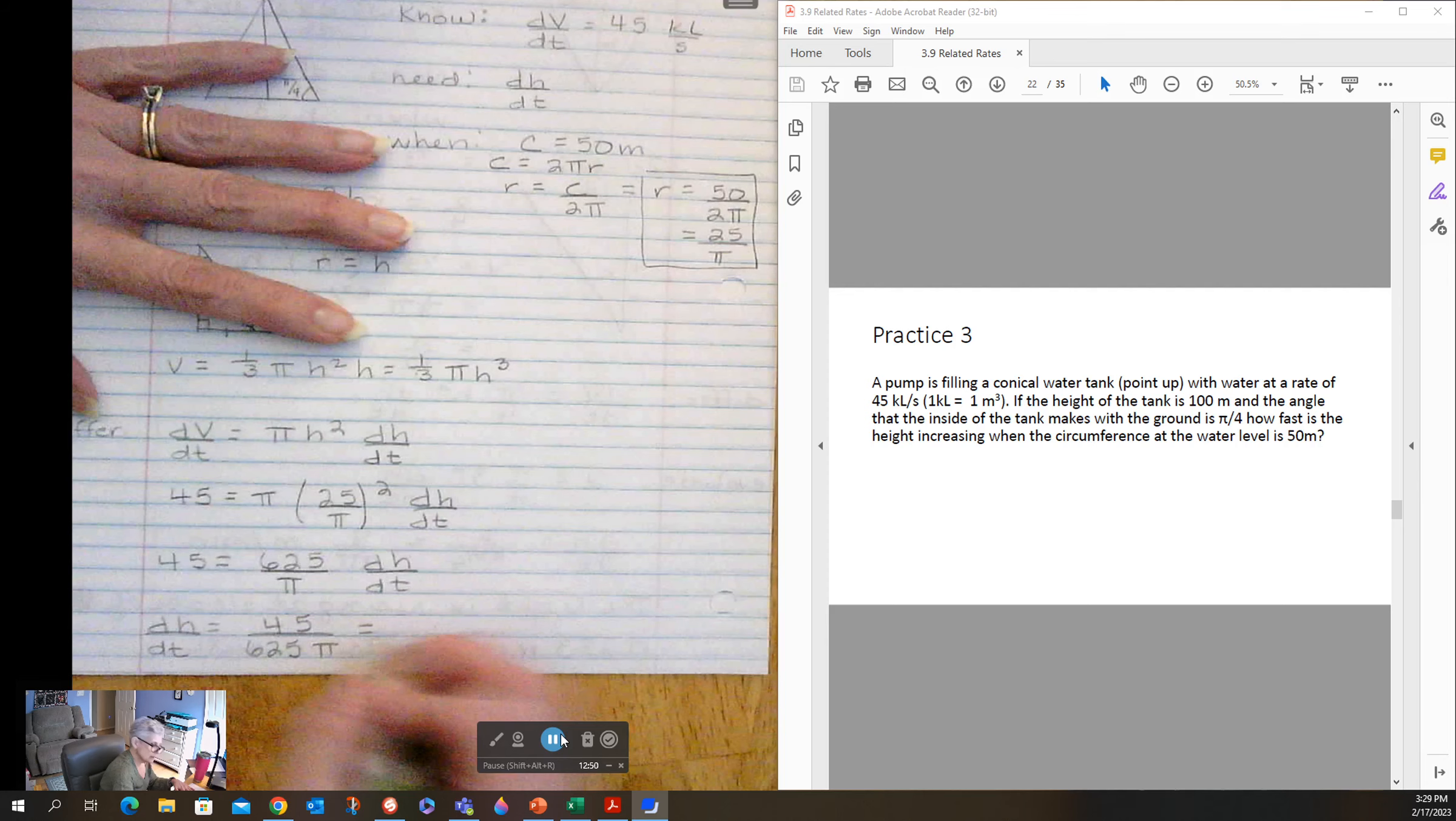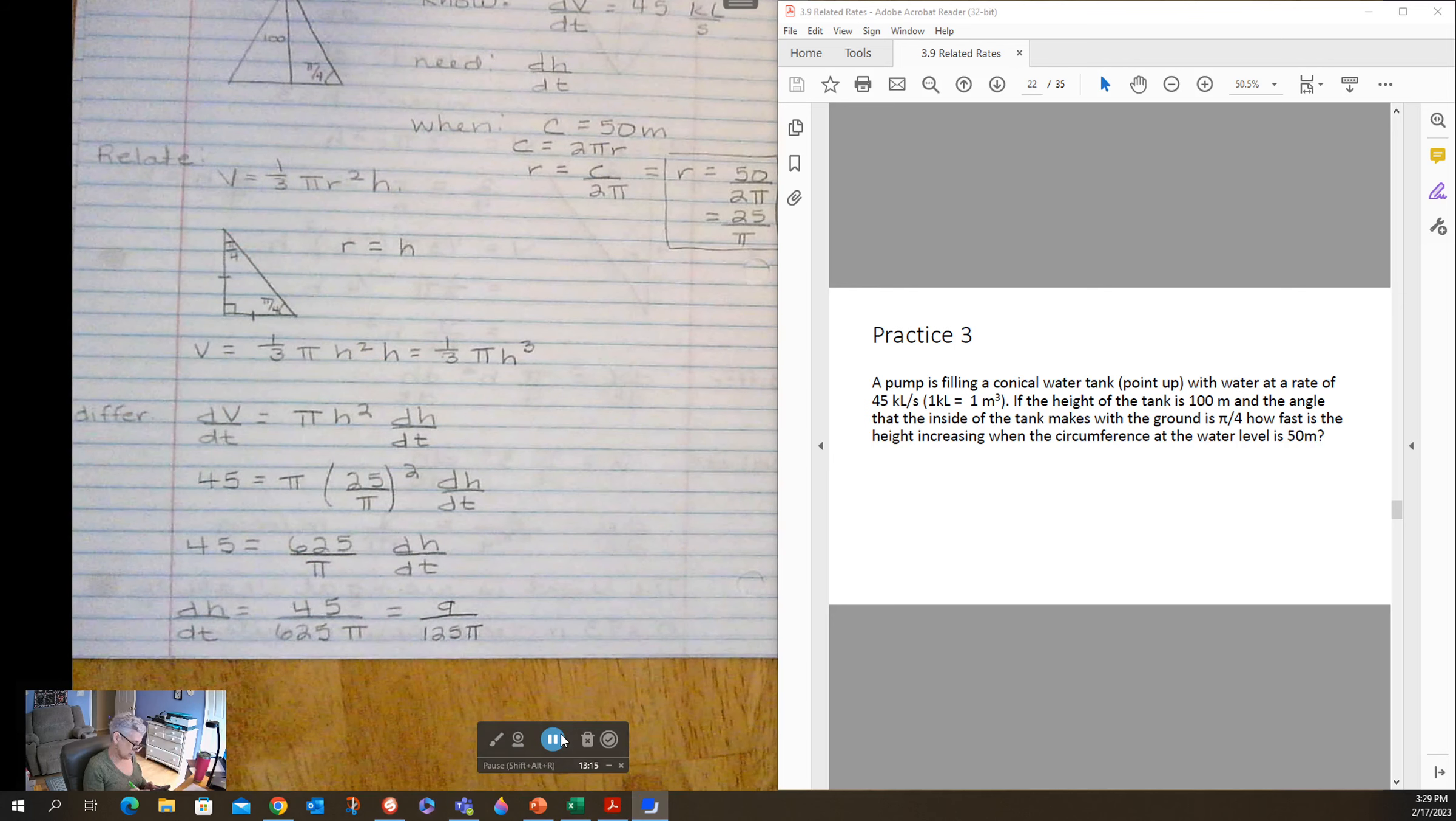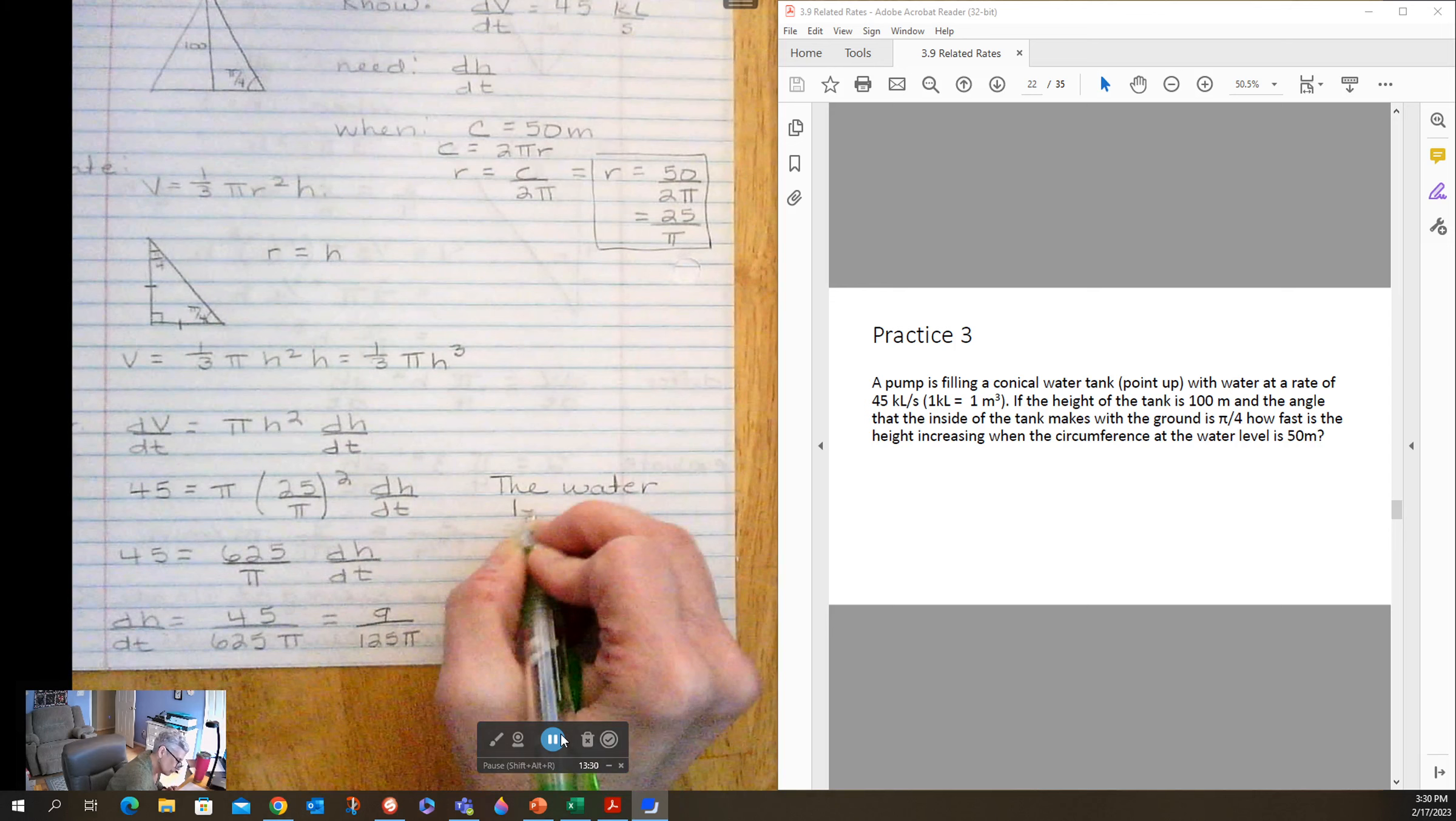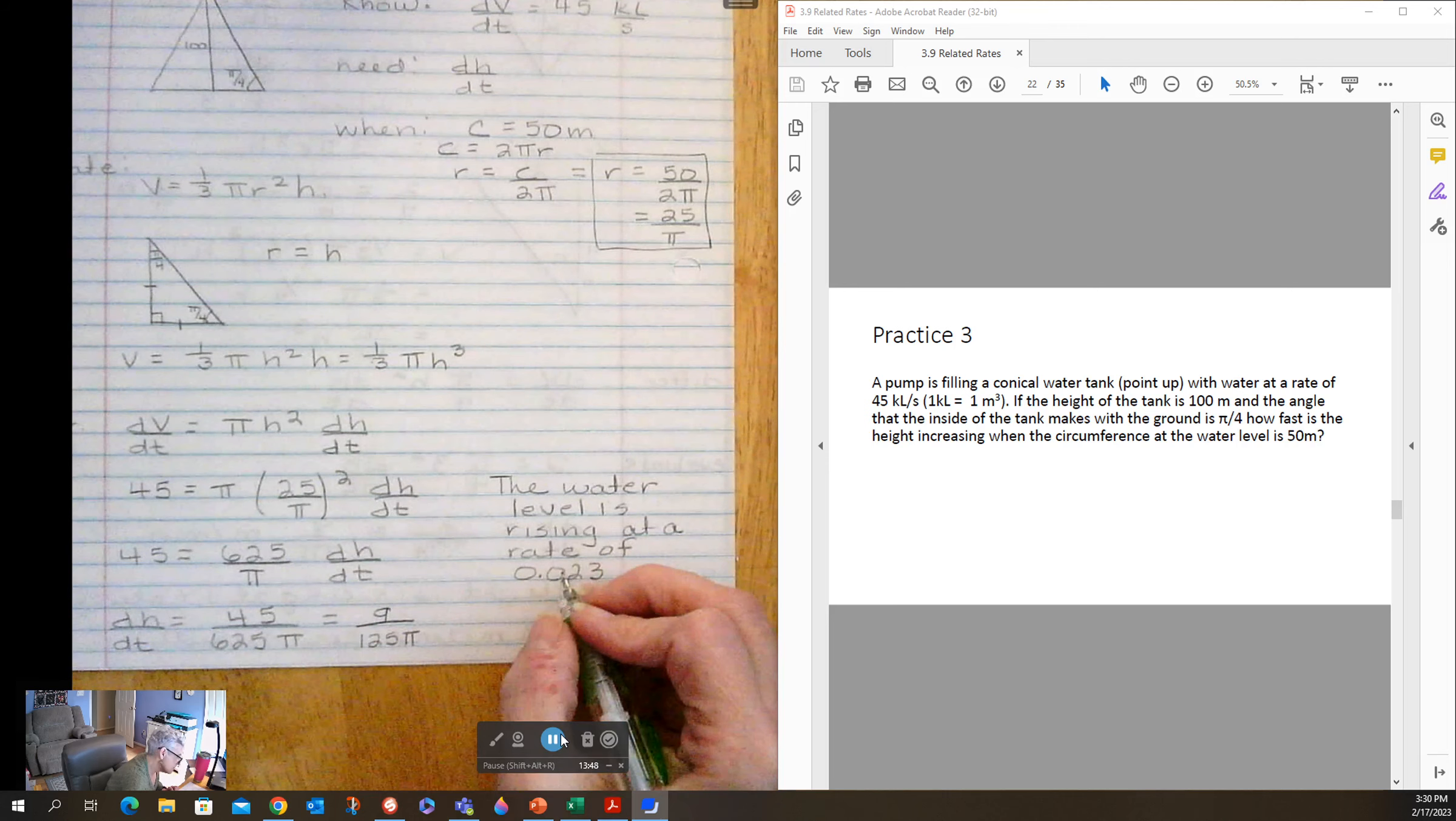Let's write that in lowest terms. So 45 over 625, that would be 9 over 125. And now let's do 9 over 125 pi, gives me 0.023. So the water level is rising at a rate of 0.023 meters per minute.